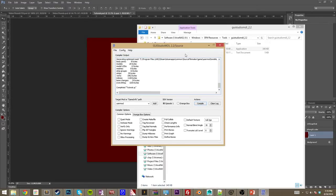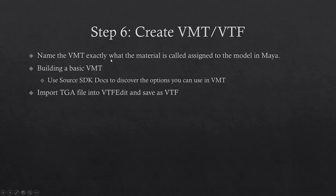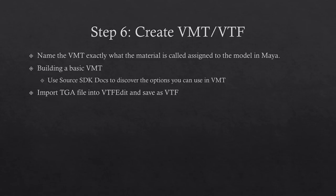We have completed compiling our model for the first run. Now on step six, we're going to create our VMT and VTF files. The VMT file name is the material name we called the target file and assigned in Maya — we called it 'tutorial,' so it's expecting a 'tutorial.vmt' file. Otherwise it won't find the VMT it's expecting. You can open the SMD file in a text editor and find what material name it's looking for, then do a find and replace, or just correct it in Maya before you export.